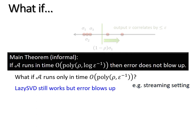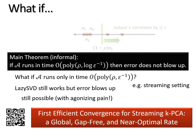In such a case, you can still apply lazy SVD, but errors will blow up, meaning that you don't really get a very fast algorithm. So one needs some additional work, actually with agonizing pain in this case, to really get the most optimal algorithm, if you only have an algorithm that runs in poly 1/(ρε) convergence.